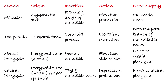For quick revision — Masseter: origin zygomatic arch, insertion ramus and angle of mandible, action elevation and protrusion, nerve supply masseteric nerve. Temporalis: origin temporal fossa, insertion coronoid process, action elevation and retraction, nerve supply deep temporal branch of mandibular nerve. Medial pterygoid: origin pterygoid plate medial side, insertion medial mandible, action elevation and side-to-side movement, nerve supply nerve to medial pterygoid. Lateral pterygoid: origin pterygoid plate and greater wing of sphenoid, insertion TMJ and mandibular neck, action depression and protrusion, nerve supply nerve to lateral pterygoid.